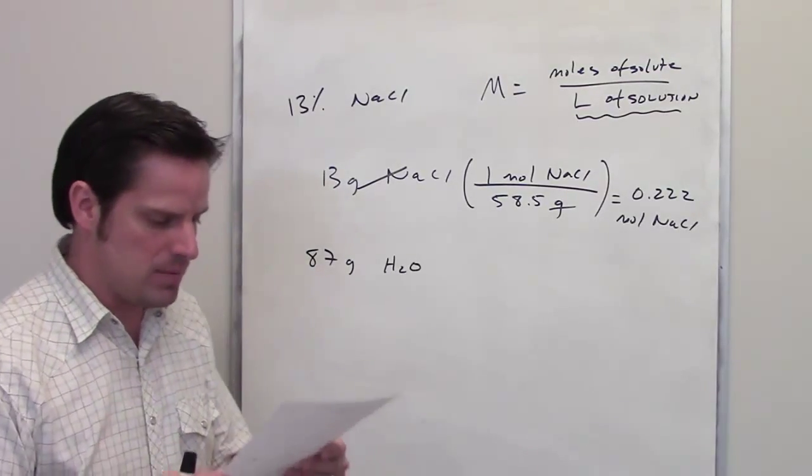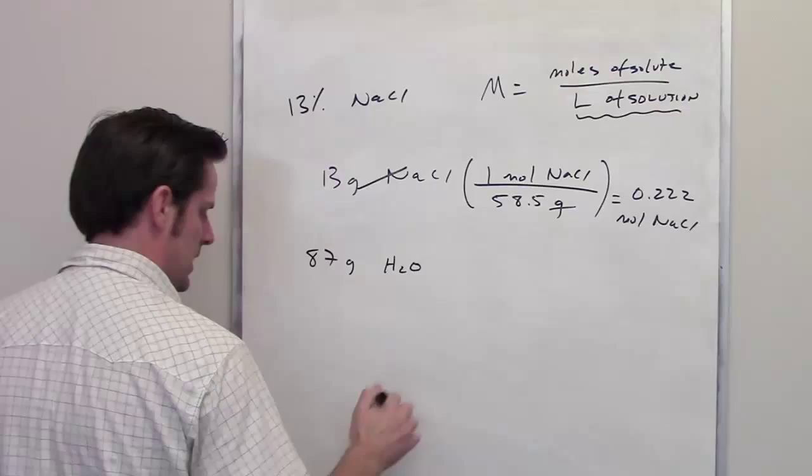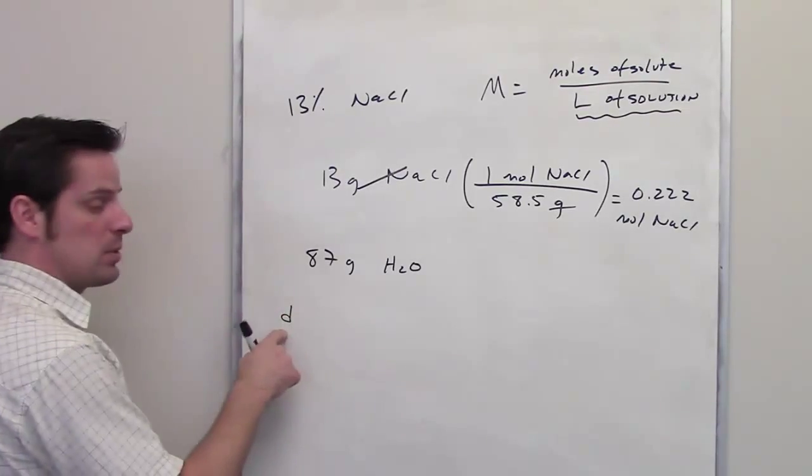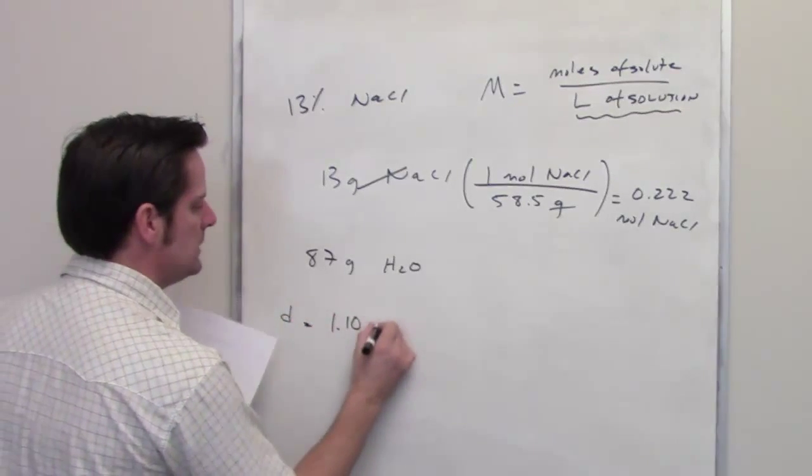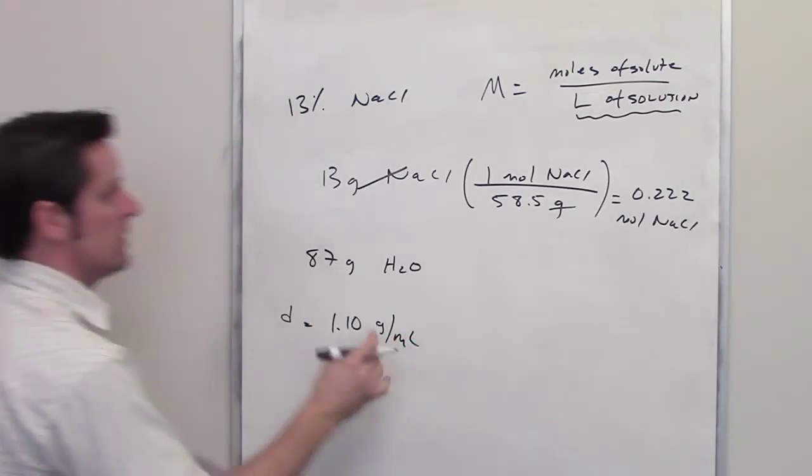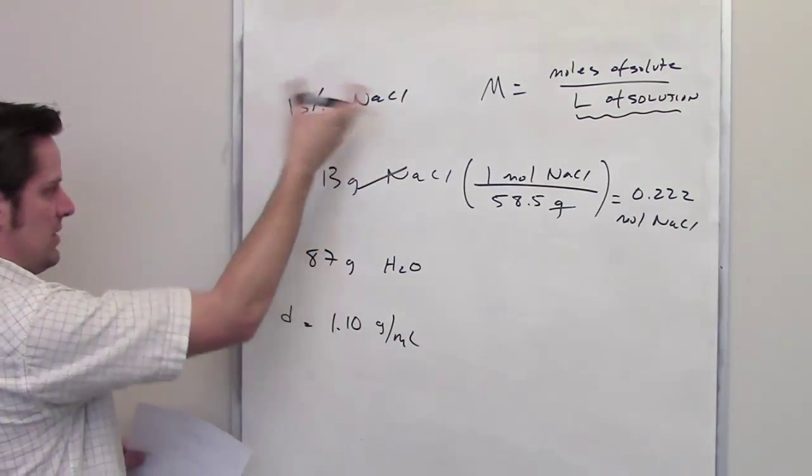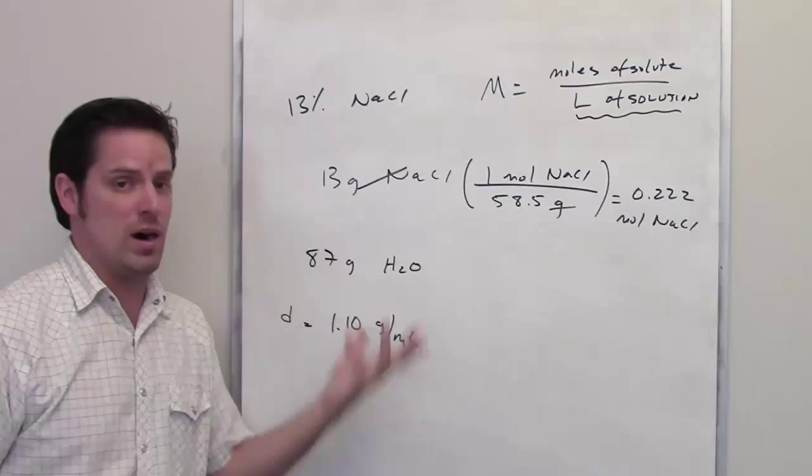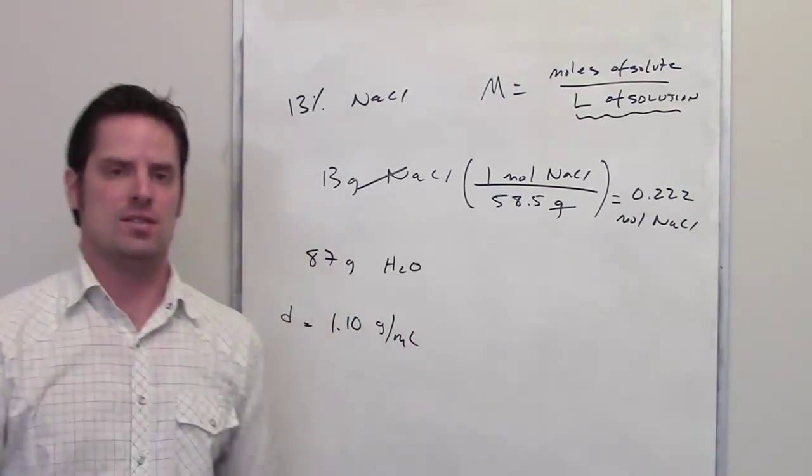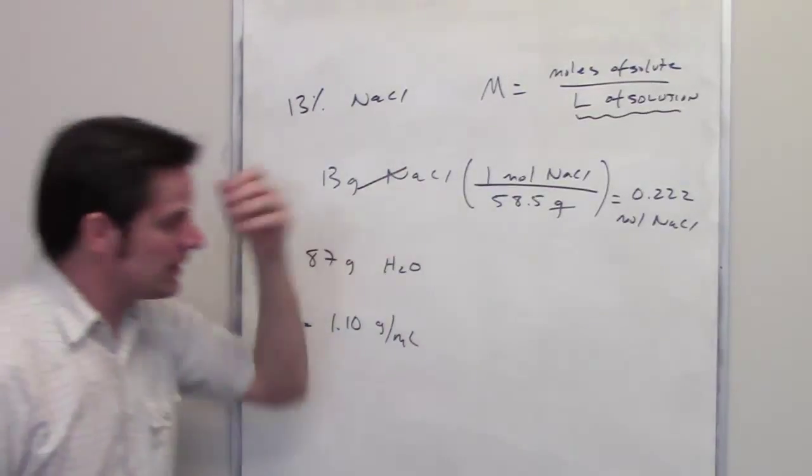It gives us in this problem the density of this particular solution. The density is equal to 1.1 grams per milliliter. So when you have 13% sodium chloride by weight in water, that happens to be how dense it is.